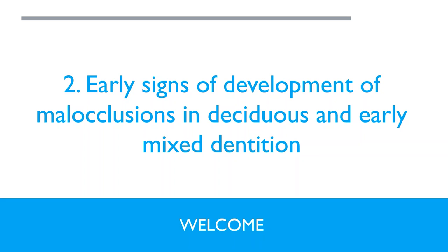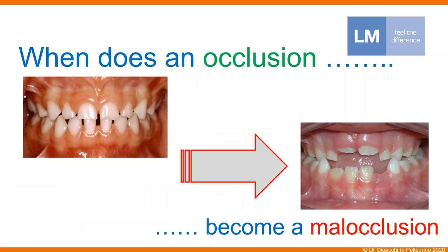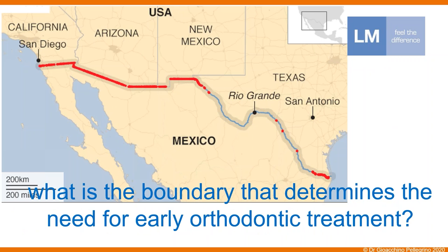Today we will start about the early signs of development of malocclusions. We can think about this concept: when does an occlusion become a malocclusion? What is the boundary that determines the need for orthodontic treatment, or makes us decide to wait for treatment later in late mixed dentition or when the permanent teeth are present in the mouth?